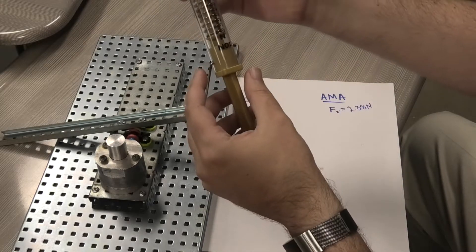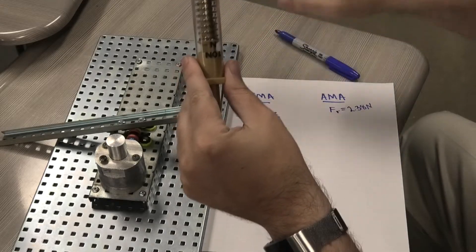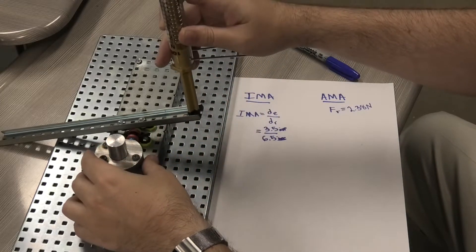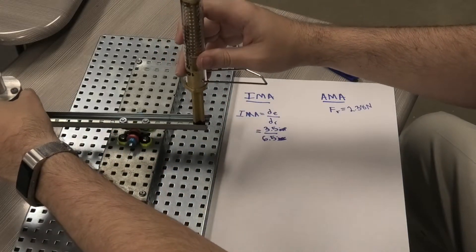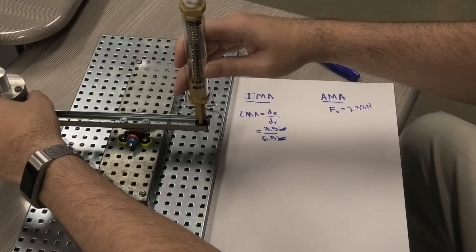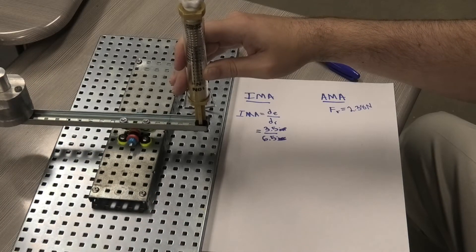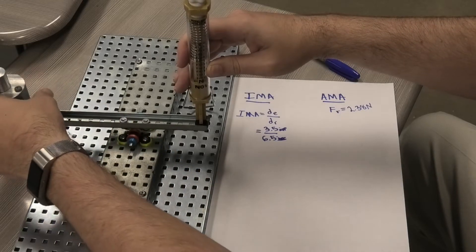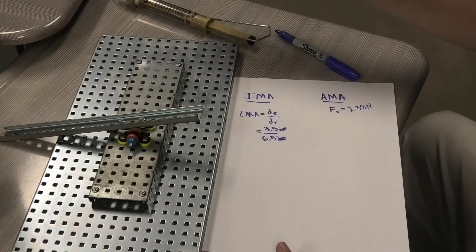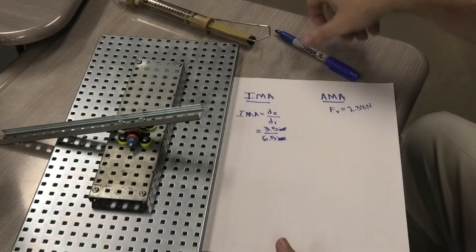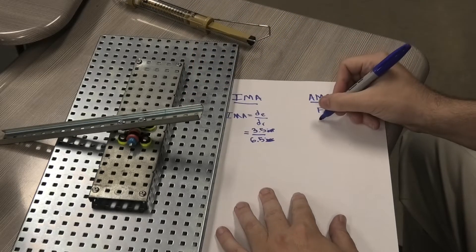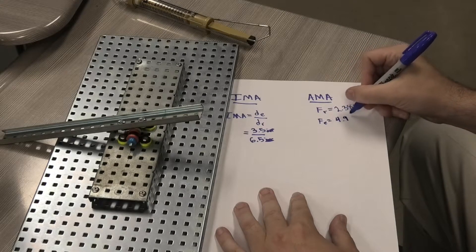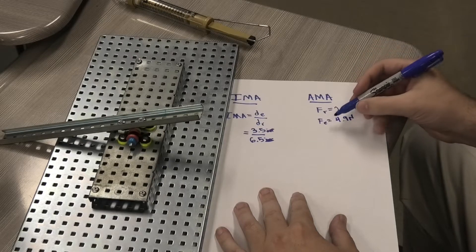What we're going to do is we're going to try to balance this out. I have to make sure that my spring scale is at zero. I'm going to balance this out and try to get, now balancing this out, it comes out to about 4.9 Newtons on balancing. So that's going to be my effort force. My effort force was how much I actually pressed down, so FE is going to be equal to 4.9 Newtons.